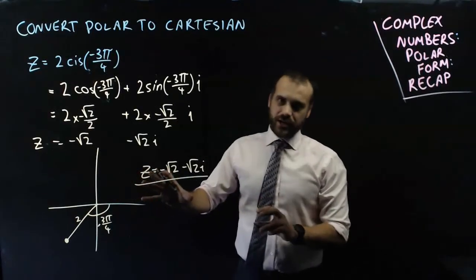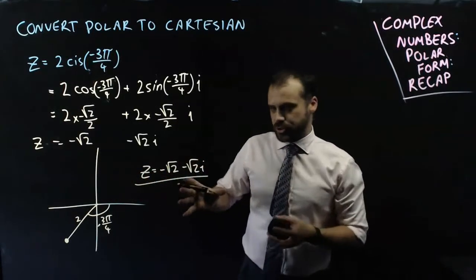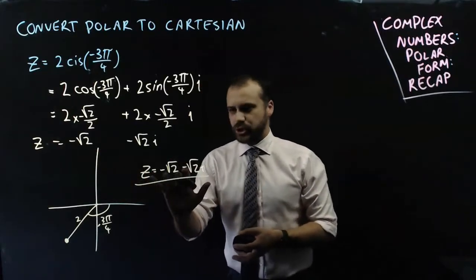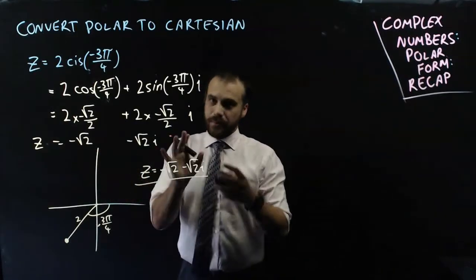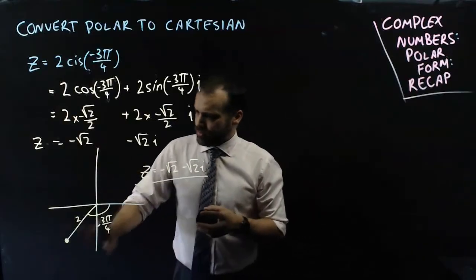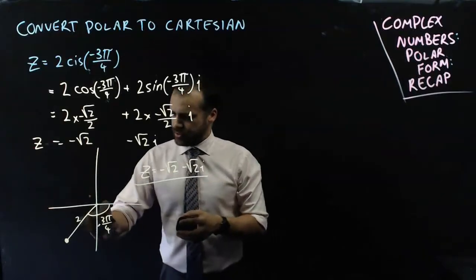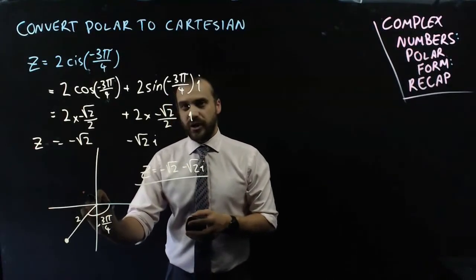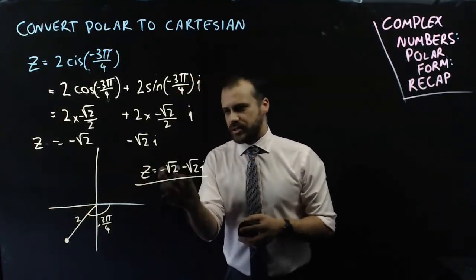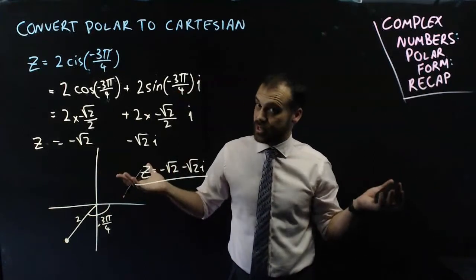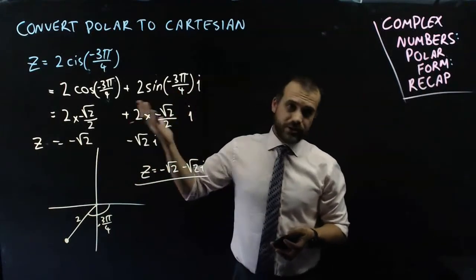Now you don't have to draw the Argand diagram, but I think you'd be a fool not to. Just because you can double check to make sure this makes sense. This makes sense for a couple of reasons. We've drawn it in the third quadrant, so these should both be negative. Also, this angle here ends up being 45 degrees, right? So we would expect those two values to be the same.